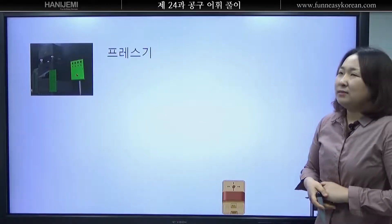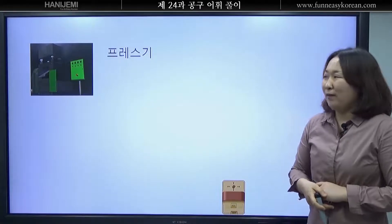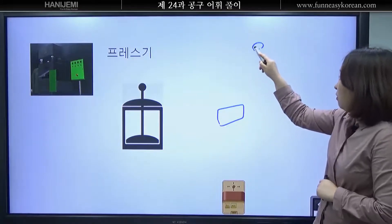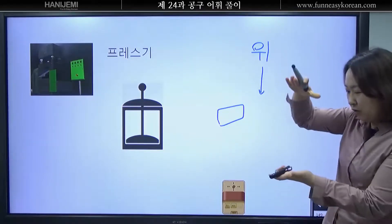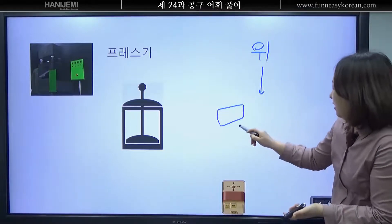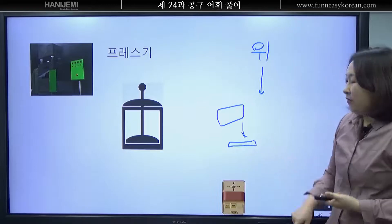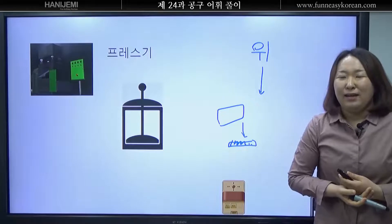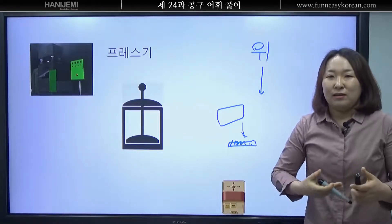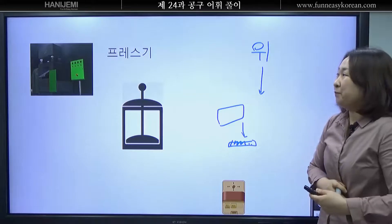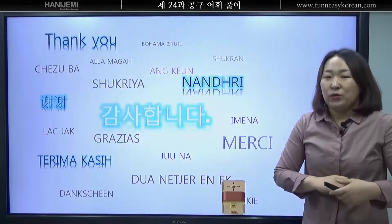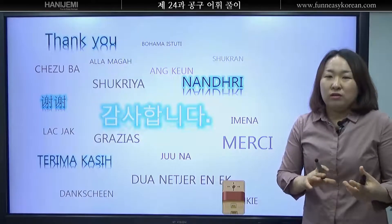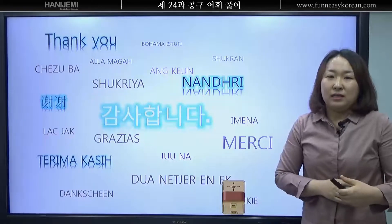자 여러분 이것은 무엇입니까? 프레스기라고 합니다. 선생님 프레스기가 뭐예요? 아주 이런 물건이 있어요. 그러면 위에서 아래 이렇게 눌러요. 그러면 나중에 이렇게 돼요. 이렇게 만드는 기계의 이름이 바로 프레스기입니다. 여러분이 공장에서 일을 하게 되면 볼 수 있는 기계입니다. 오늘 공구에 관해서 배워봤습니다. 이 공구로 어떻게 사용해야 합니까? 언제 사용합니까? 를 잘 기억해야 합니다.